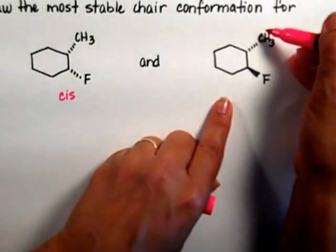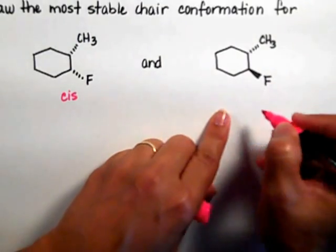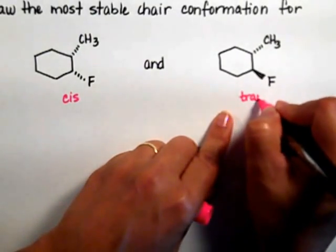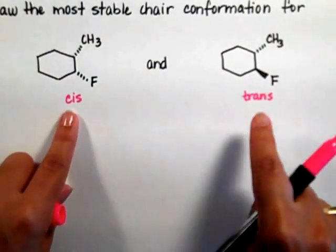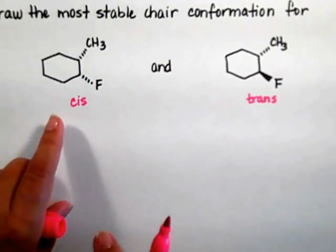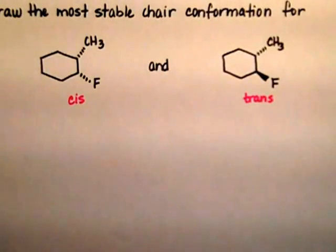This one I have one substituent in the back and one in the front, so this one is the trans. Cis and trans, these two compounds that I have here are stereoisomers of each other.